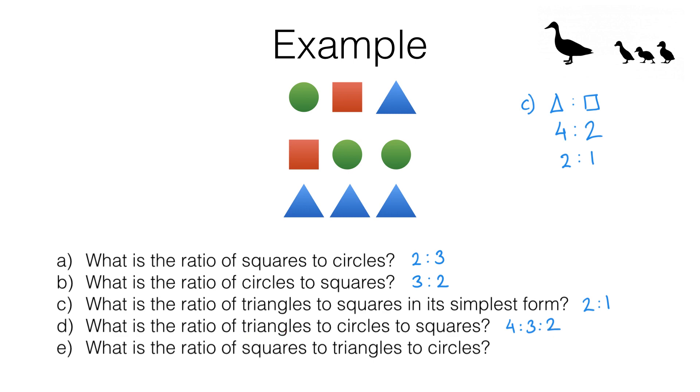So when we just had triangles and squares and had a ratio of 4 to 2 like in the previous question we could simplify. But now because we don't have a common factor between 4, 3 and 2 we have to leave it as it is.